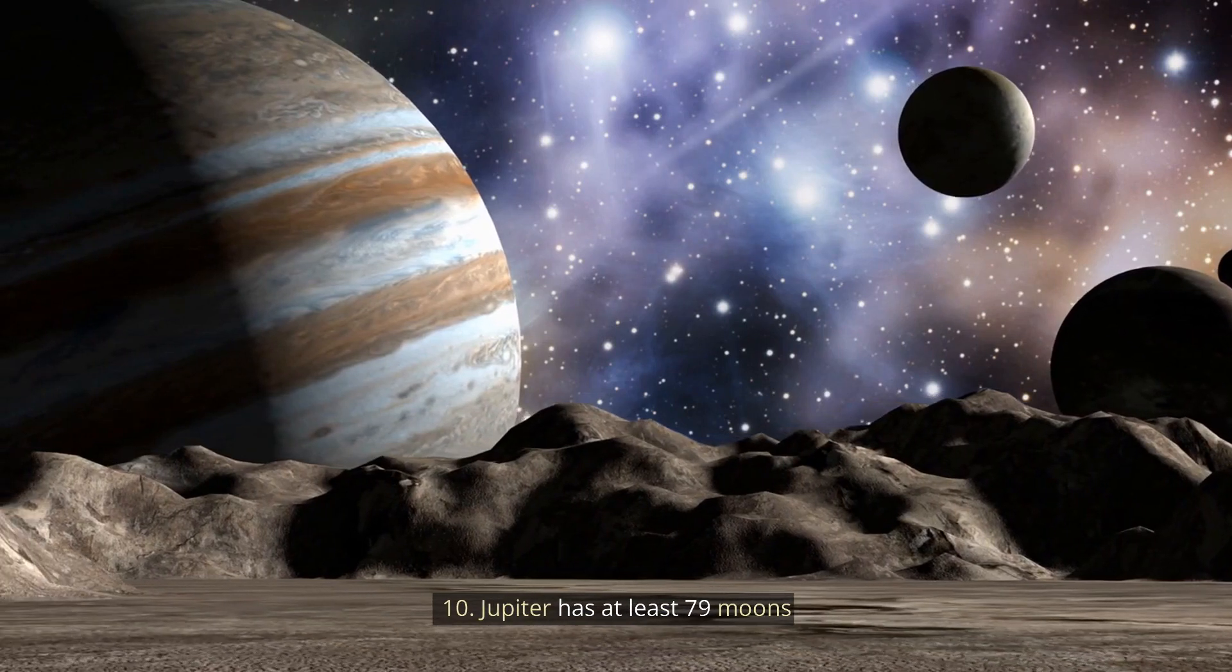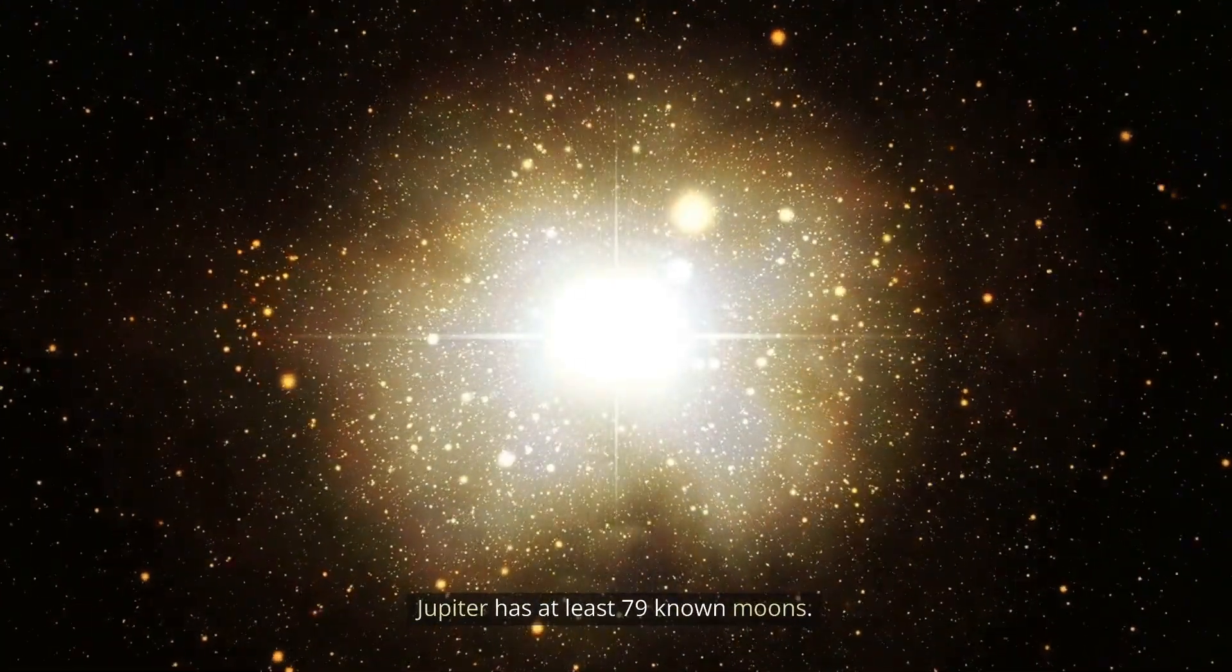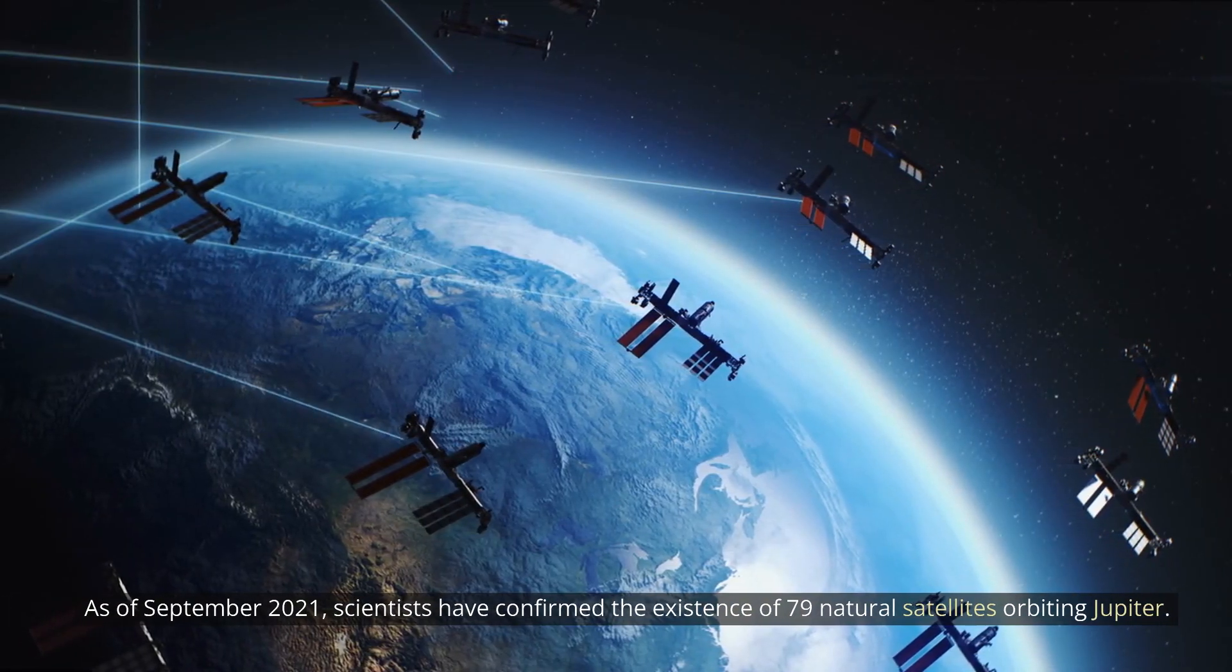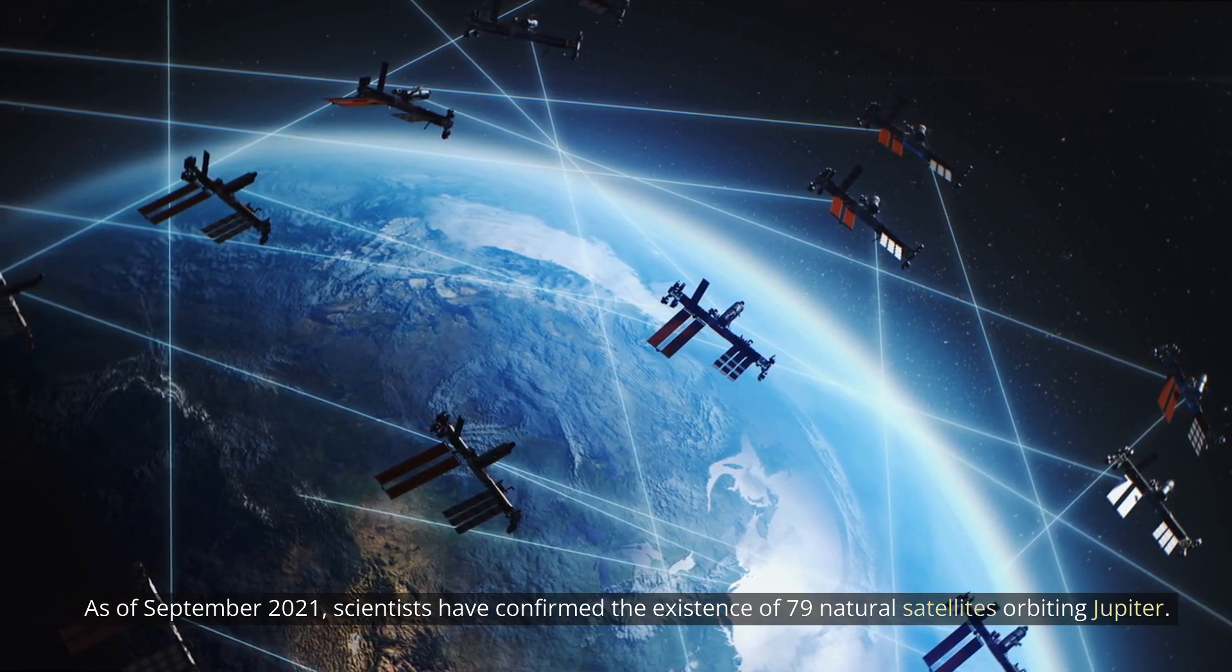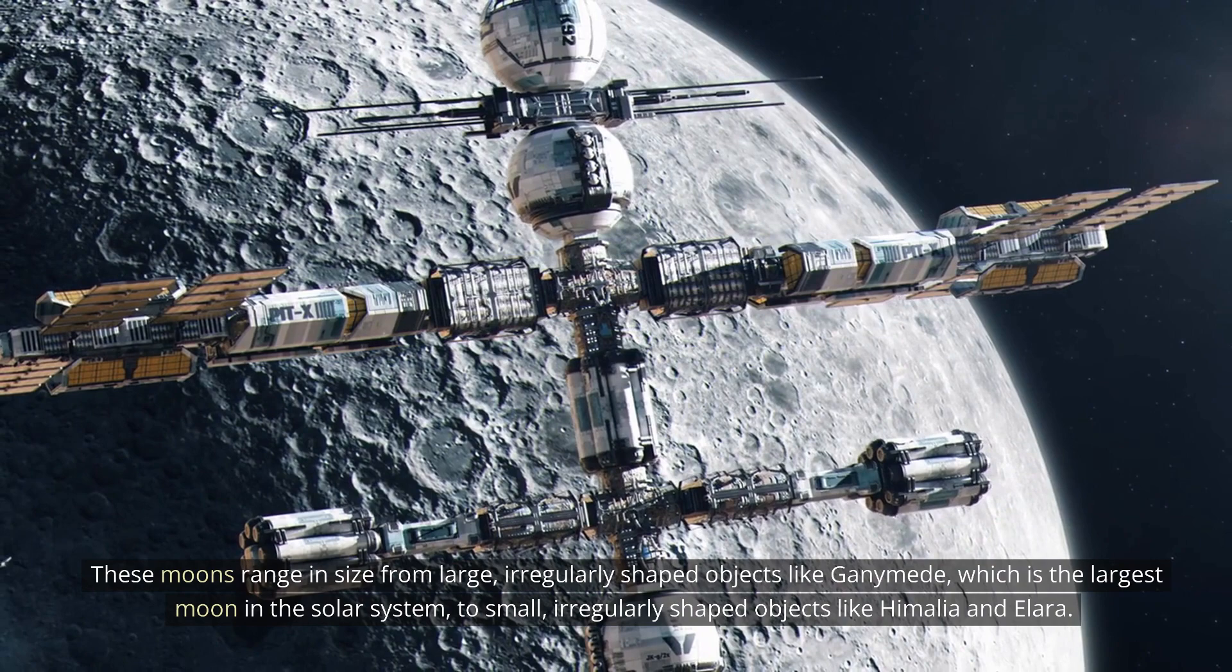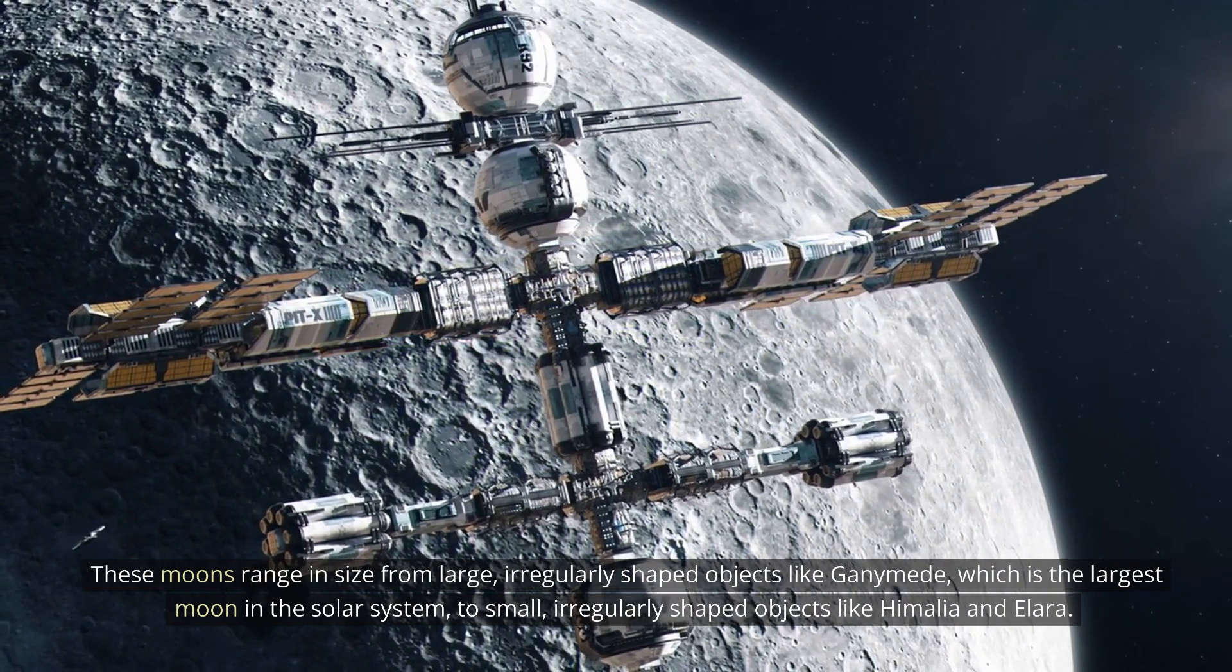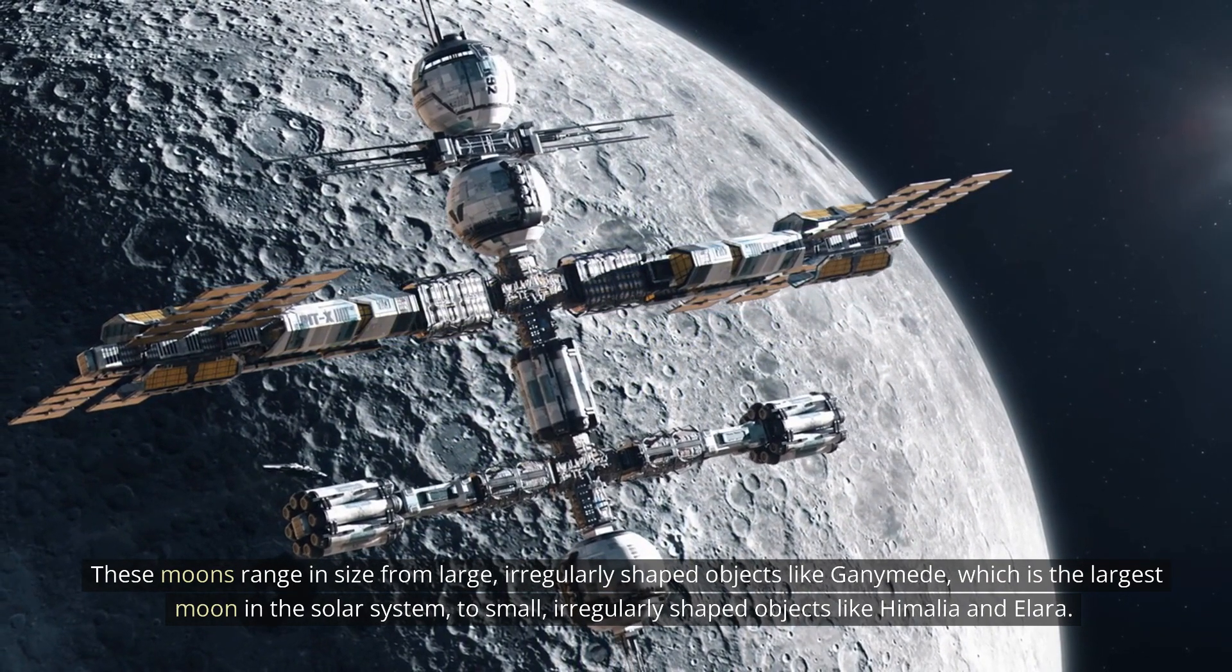10. Jupiter has at least 79 moons. Jupiter has at least 79 known moons. As of September 2021, scientists have confirmed the existence of 79 natural satellites orbiting Jupiter. These moons range in size from large, irregularly shaped objects like Ganymede, which is the largest moon in the solar system, to small, irregularly shaped objects like Himalaya and Alara.